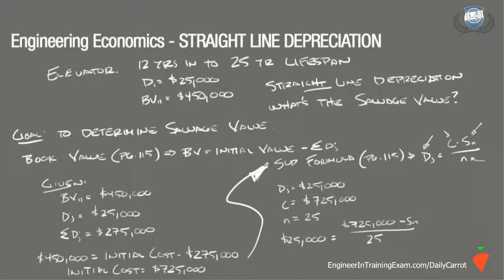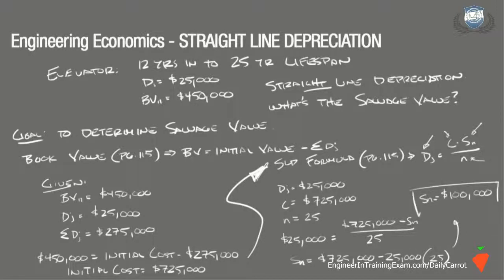Plugging these values into the equation, we find that $25,000 is equal to $725,000 minus S sub N divided by 25. Rearranging and solving for the salvage value, we get S sub N equals $725,000 minus $25,000 times 25, and that equals $100,000. So the salvage value is $100,000.